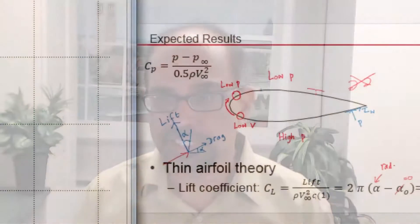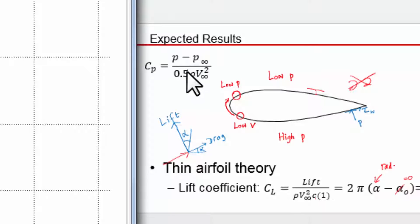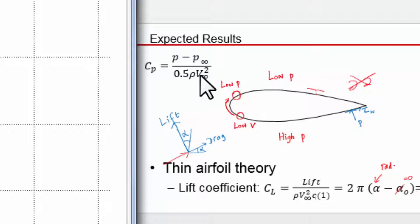We will make a plot of the pressure coefficient variation along the airfoil surface. The pressure coefficient is a non-dimensionalized pressure, usually denoted as C sub P. In the numerator is the change from the free stream pressure — that's a gauge pressure. In the denominator, you have the dynamic pressure, which is half rho V-infinity squared — the density times the free stream velocity squared.